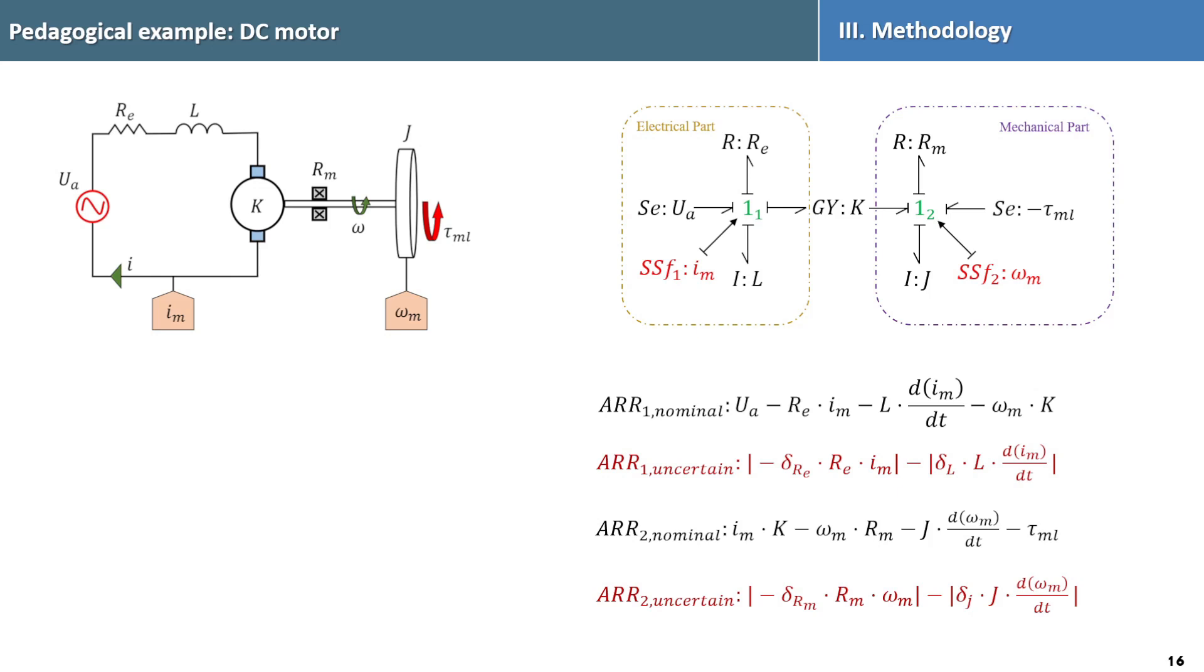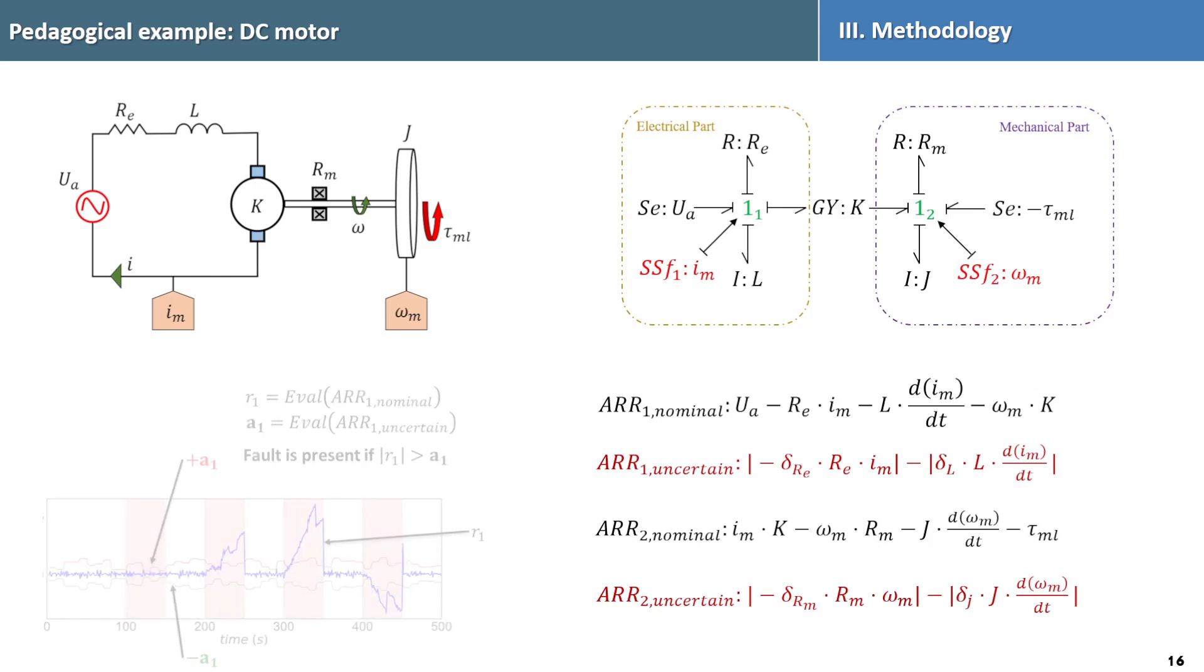Both junctions generate two residuals representing the analytical redundancy relations. For the electrical part, this relation resembles Kirchhoff's voltage law. And for the mechanical part, it mirrors Newton's force balance. This result in generation of two residuals and two uncertain residuals capturing the parameter uncertainties.